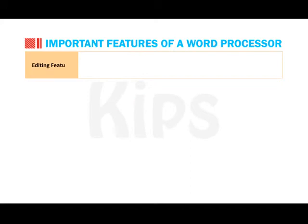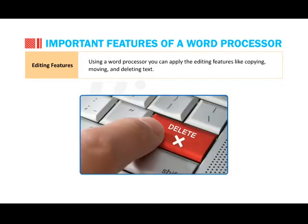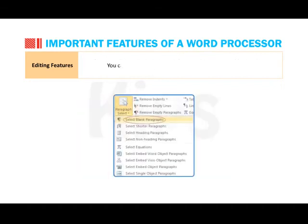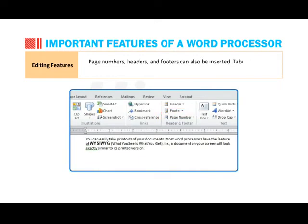Editing Features: using a Word Processor, you can apply editing features like copying, moving and deleting text. You can overwrite or insert a sentence, paragraph or word. Page numbers, headers and footers can also be inserted. Tabular data in documents can also be presented.